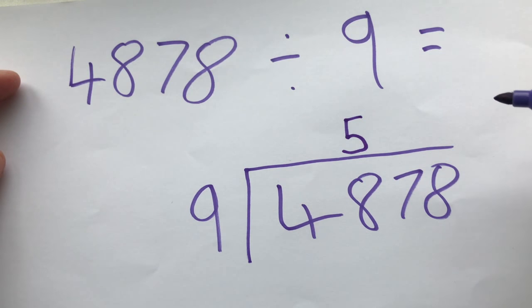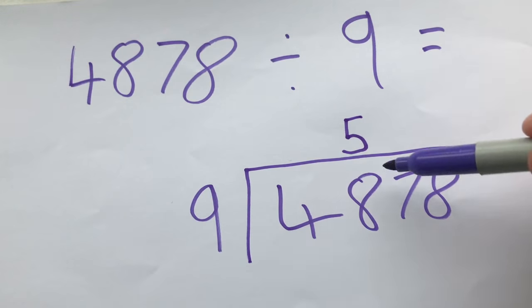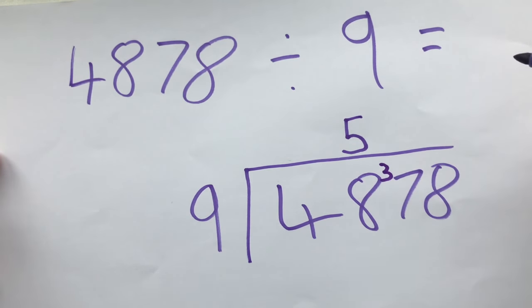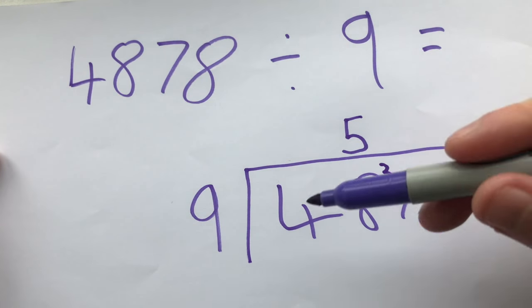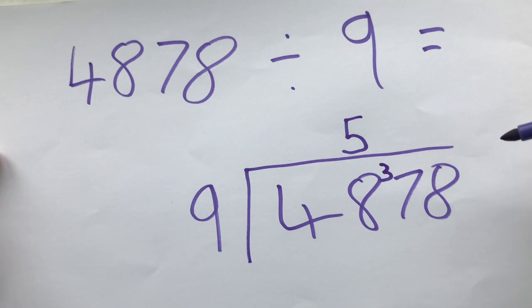Now what we do now is we look at the difference. So nine fives make 45, but we've got 48 spaces available. So we write the difference in here. We carry that over. The difference was three. There's 45 spaces, but 48 altogether. So we squeeze that extra digit in there that we carry over.